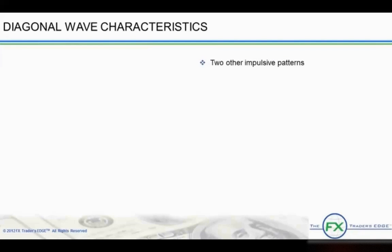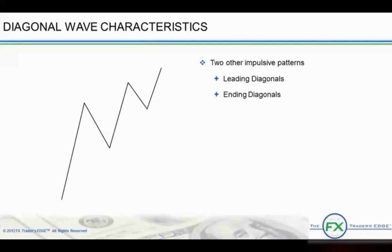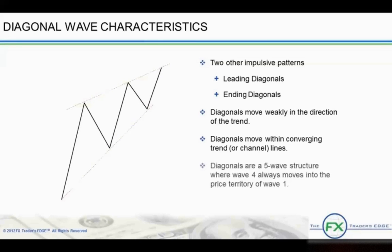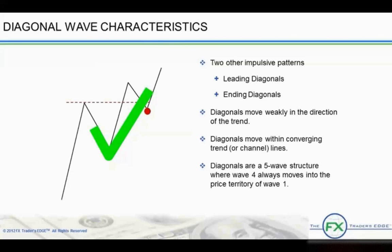There are two other impulsive Elliott Wave patterns which move with the larger trend: leading diagonals and ending diagonals. The diagonal wave structure is different from the impulse wave structure. While impulse patterns strongly move in the direction of the trend, diagonals move more weakly in the direction of the trend. Diagonals move within converging trend or channel lines. In impulse structures, wave 4 can never move into the price territory of wave 1. Diagonals, in contrast, are a five-wave structure where wave 4 always moves into the price territory of wave 1. These diagonals are most common in highly leveraged markets such as forex and commodities. Diagonal structures are also called diagonal triangles, which are different from corrective triangles covered in Module 3.